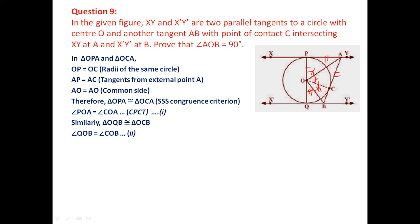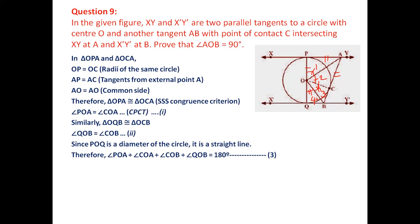Similarly, compare triangles OQB and OCB. By the same reasoning, angle QOB = angle COB. Now label angle POA = angle COA = 1 = 2, and angle QOB = angle COB = 3 = 4. Since OP and OQ lie on a diameter, angle POQ = 180°, so angles 1 + 2 + 3 + 4 = 180°.